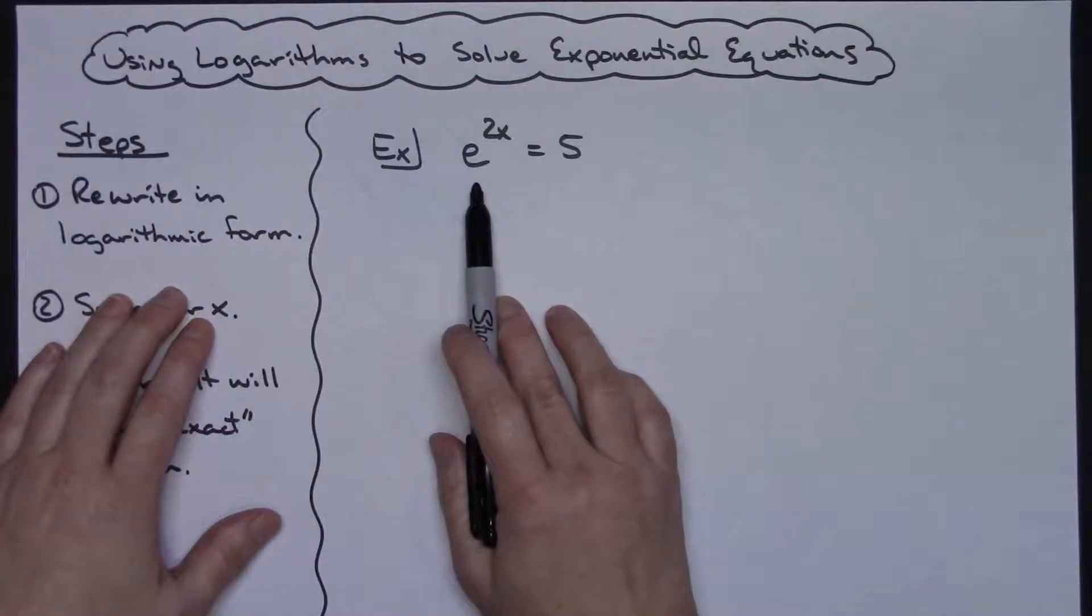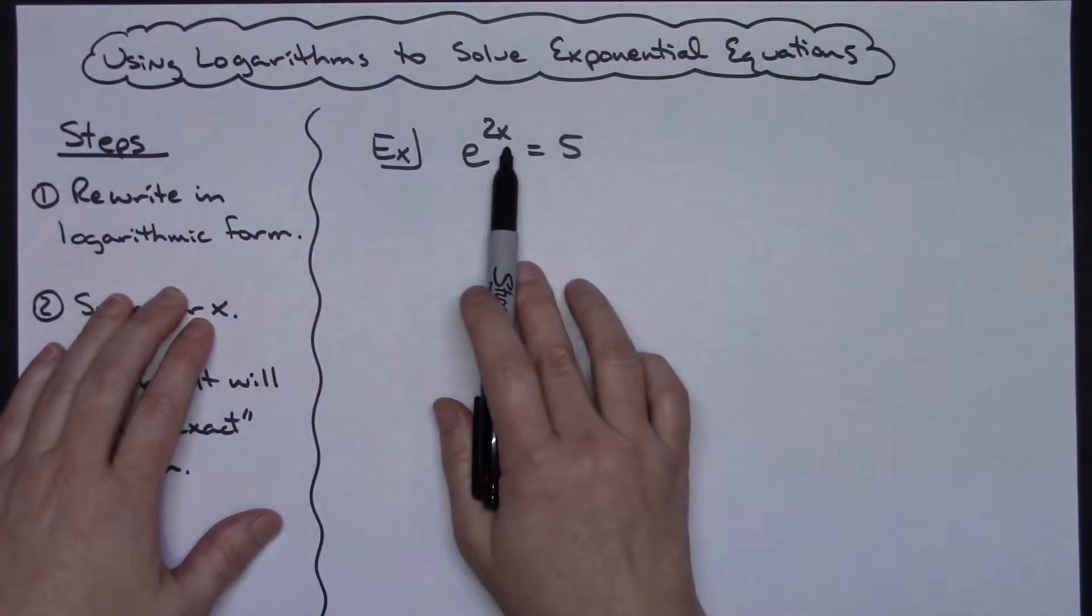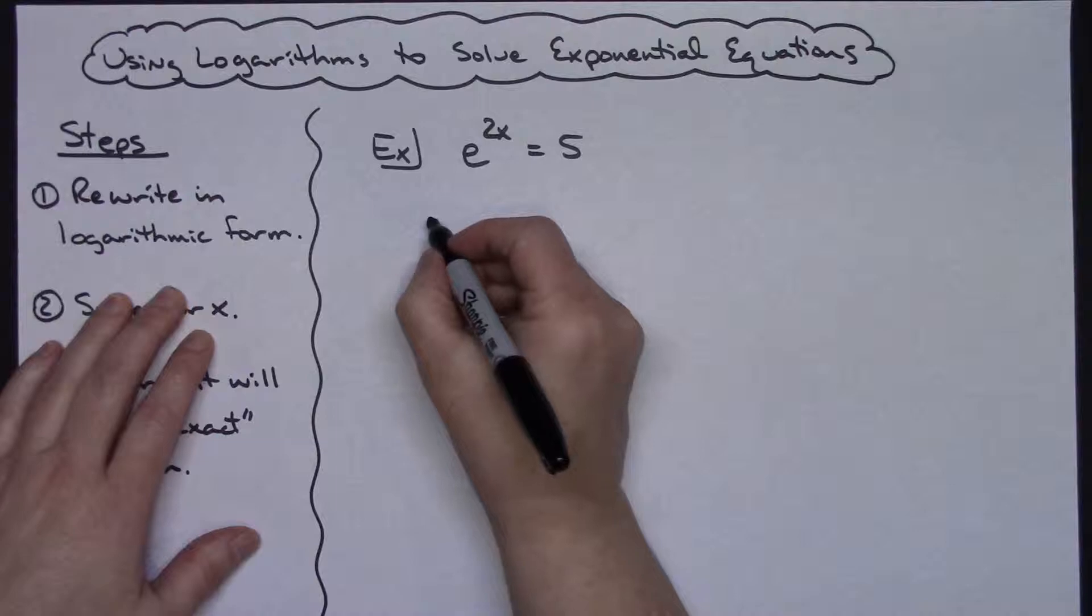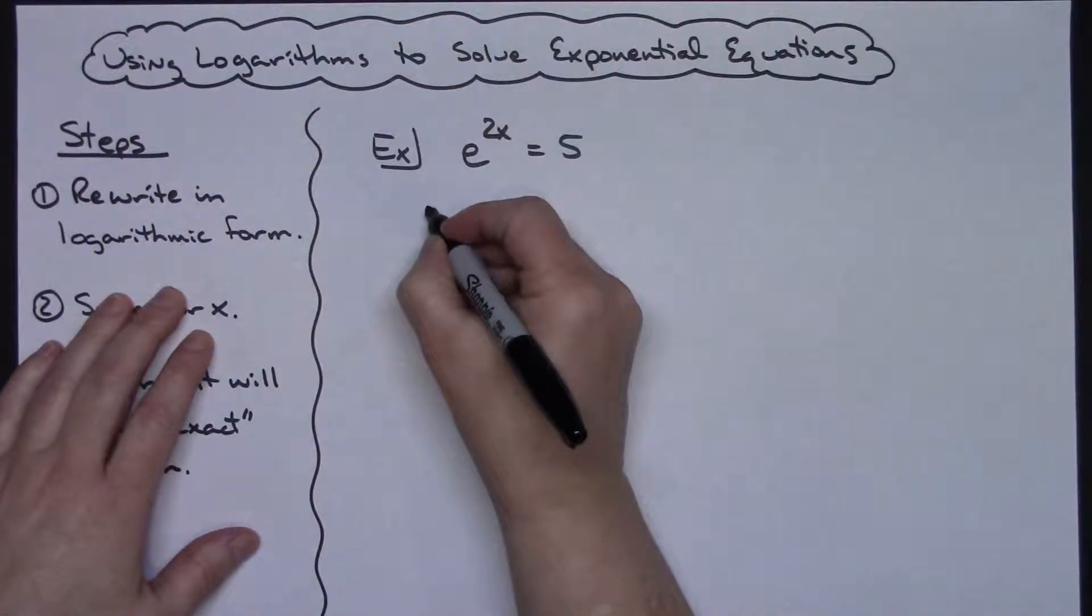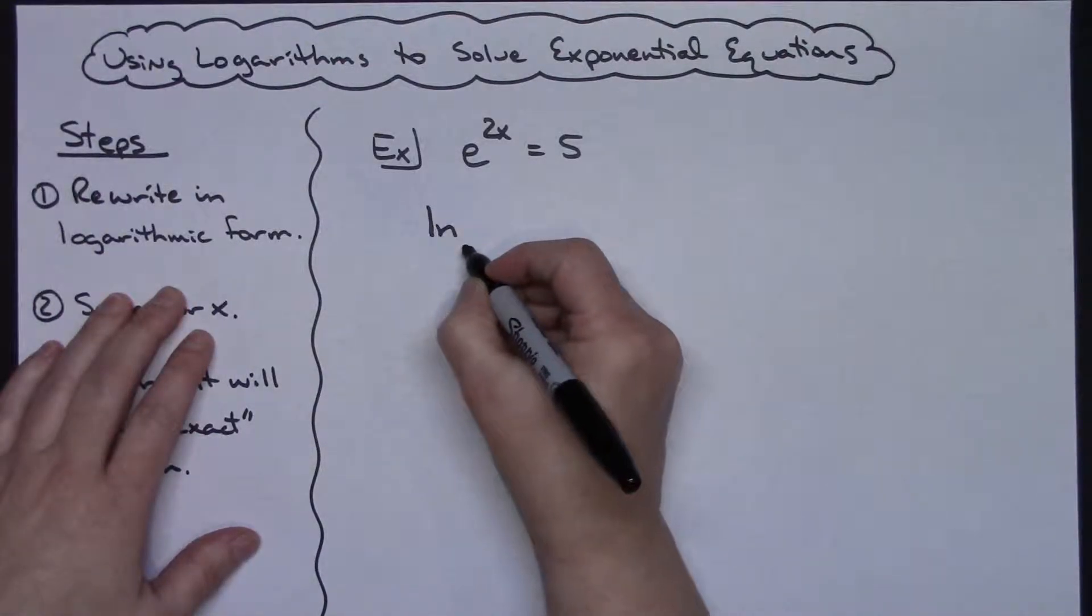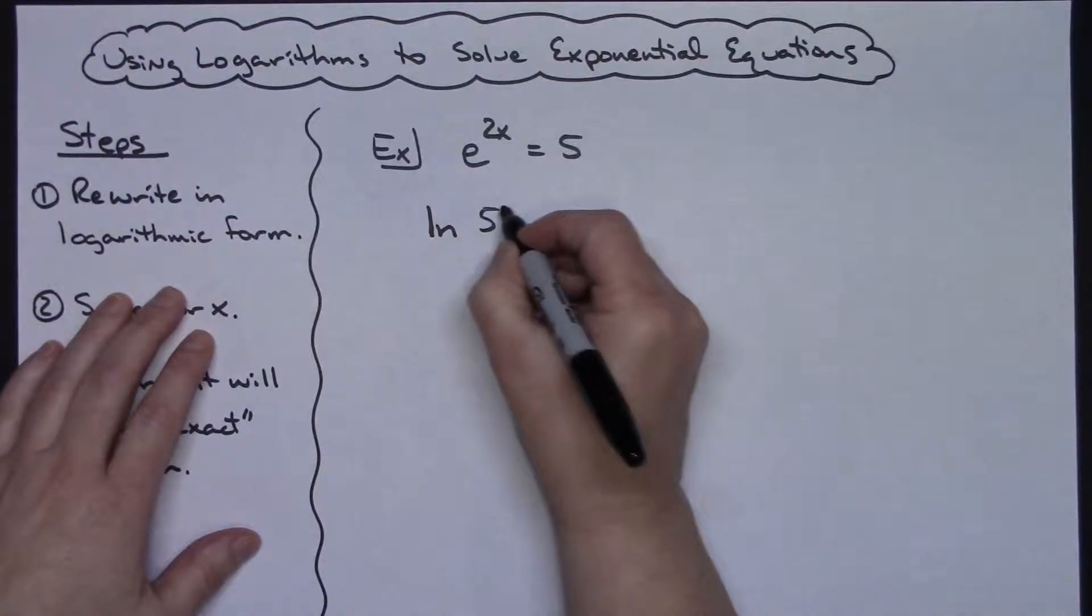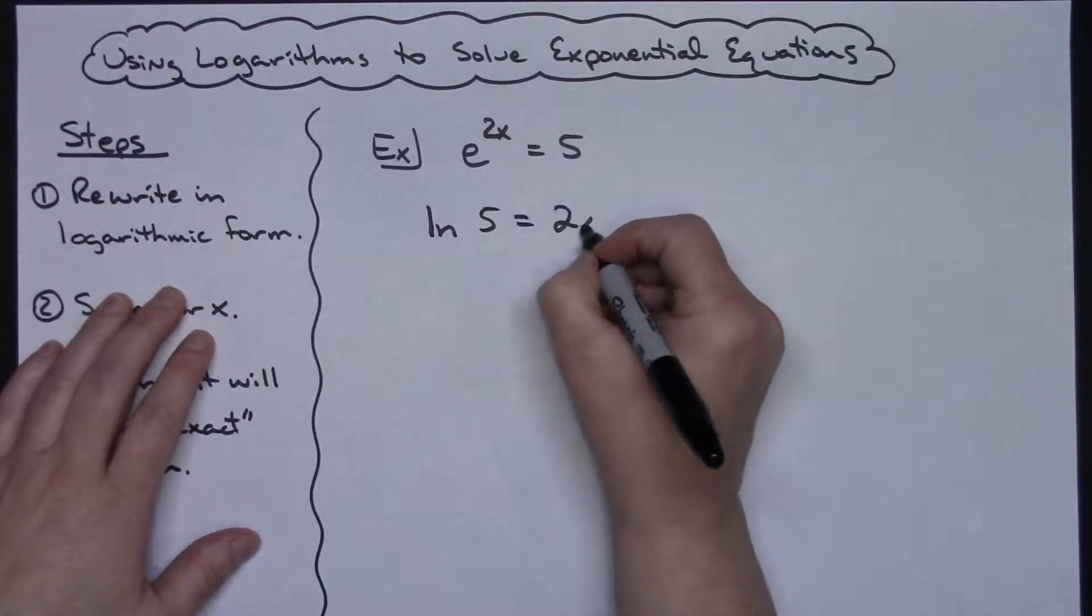Which would take care of my e raised to the fifth power equals the 2x there. So I'm going to do natural log, which is my log with my base e there, the natural log of 5 equals 2x.